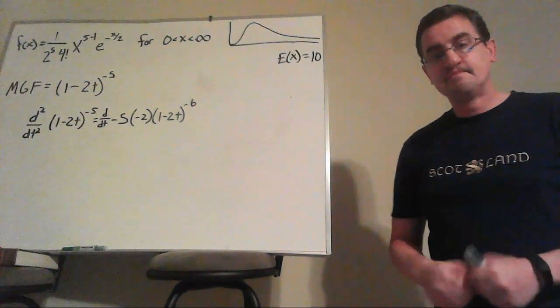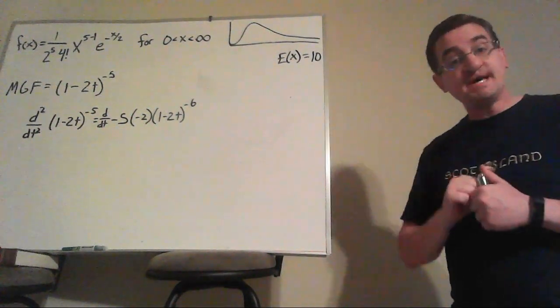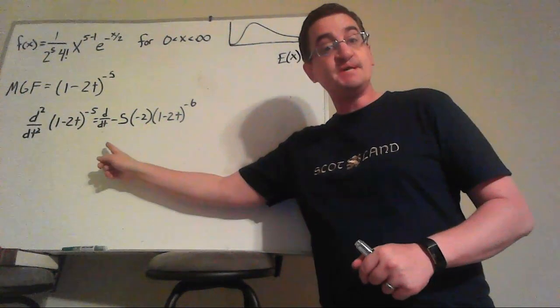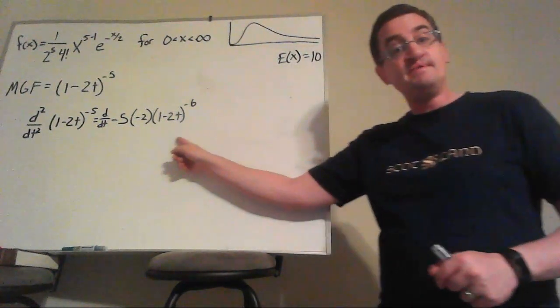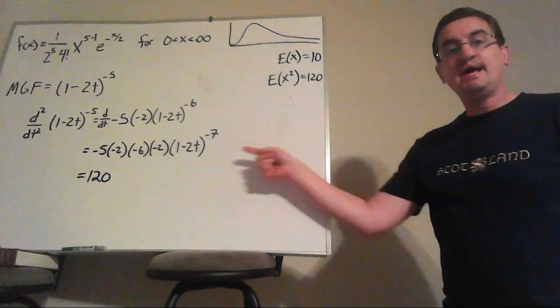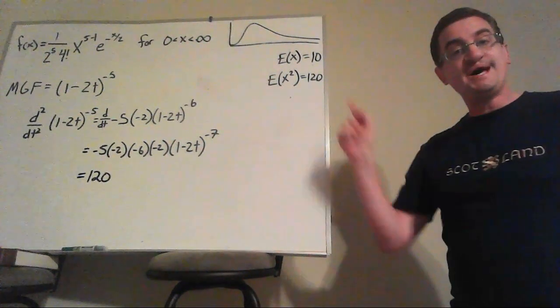This was so much easier than it would be to try to do the integration by parts over and over and over to get here. If I want to try to find the second moment, then I'm going to take the same thing I did before, except I'm going to take the derivative of the derivative I had. And now we get our second moment as 120.